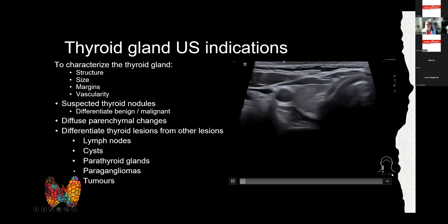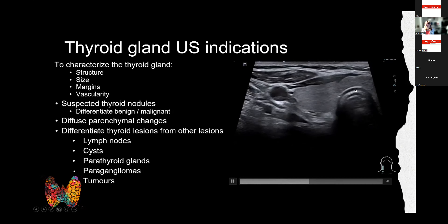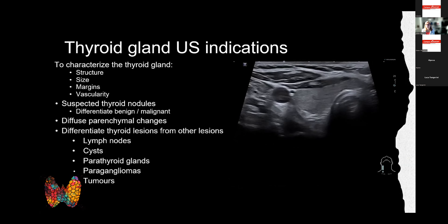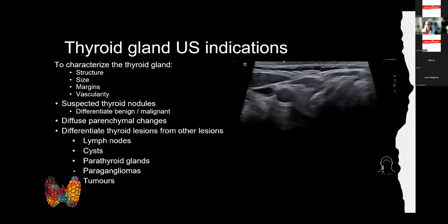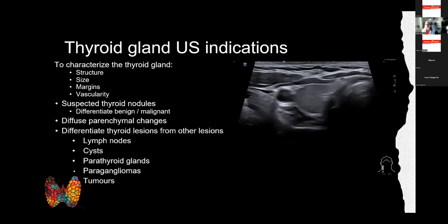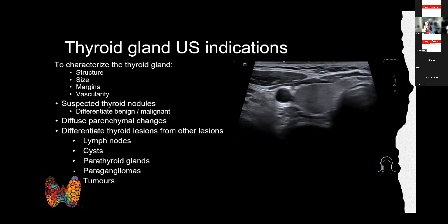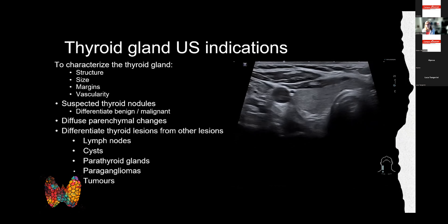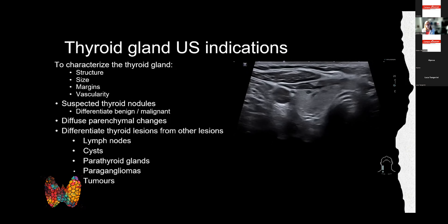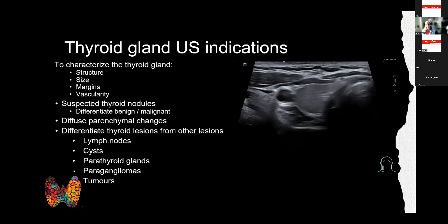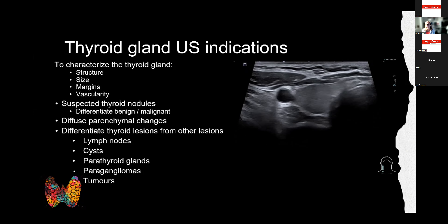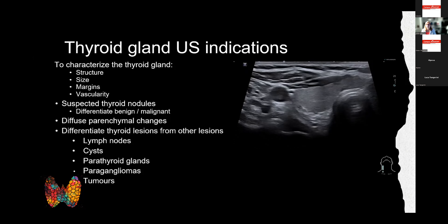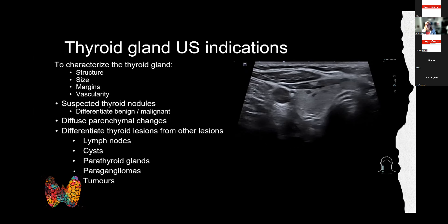In a video example of the transverse view, the trachea is seen centrally. We avoid scanning only at the midline to prevent compression of the airways. If thyroid nodules are suspected, we differentiate whether they are likely benign or show suspicious signs for malignancy — which is the main aim of the ultrasound examination. Diffuse parenchymal changes affecting the whole gland, such as thyroiditis, are also assessed.